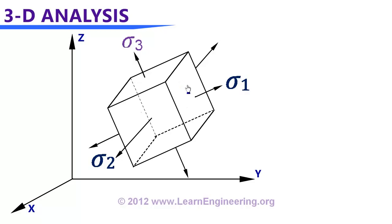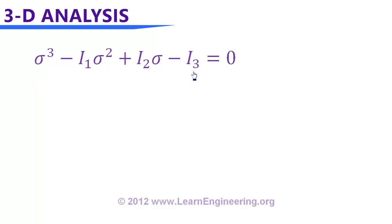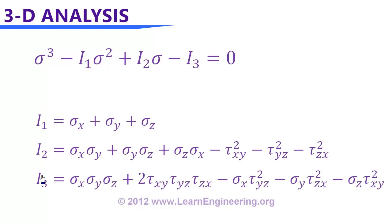To find sigma_1, sigma_2, and sigma_3 for a 3D case, there is no direct graphical method as in 2D. We must rely on an analytical method: solving a cubic equation in terms of sigma. A cubic equation has three solutions, which will be sigma_1, sigma_2, and sigma_3. The equation has three coefficients — I1, I2, and I3 — called stress invariants. Their values are expressed in terms of the stress boundary conditions, and they are called invariants because they remain unchanged regardless of the coordinate system chosen.